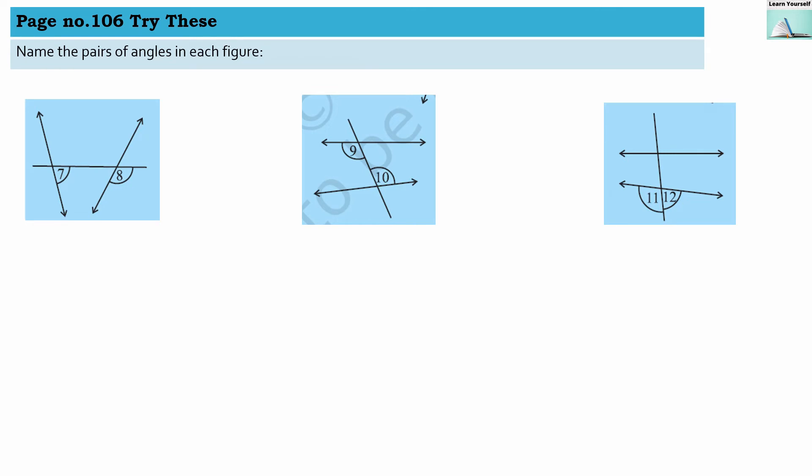Now angles 9 and 10: they are interior angles but they are diagonally opposite to each other, so they are alternate interior angles. They are a pair of alternate interior angles.